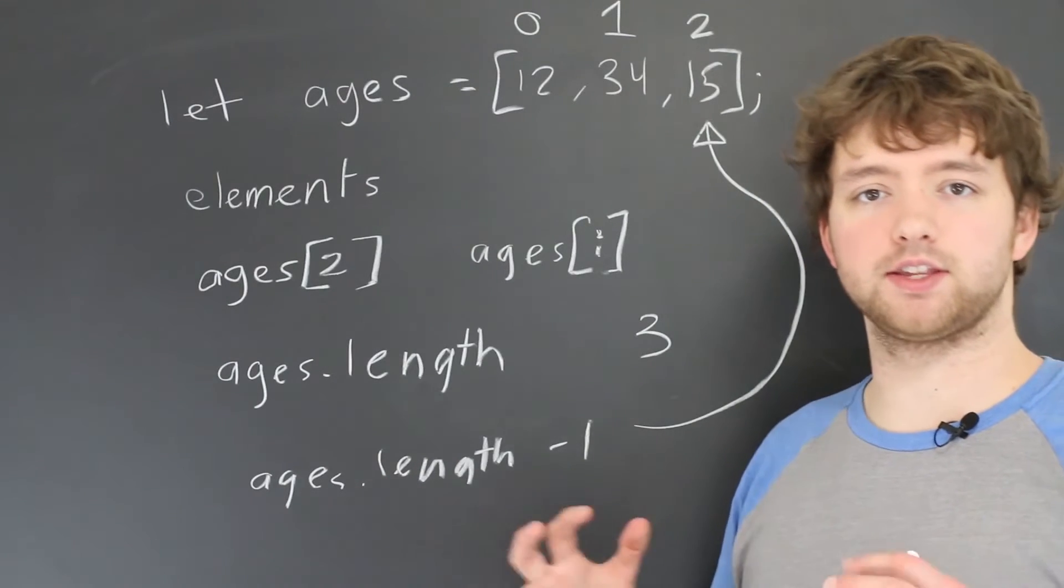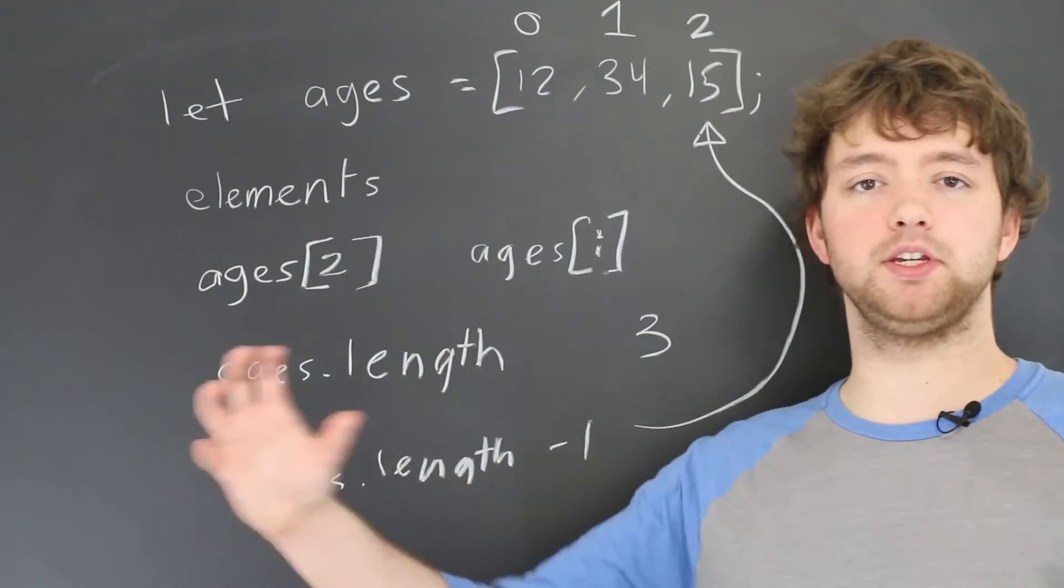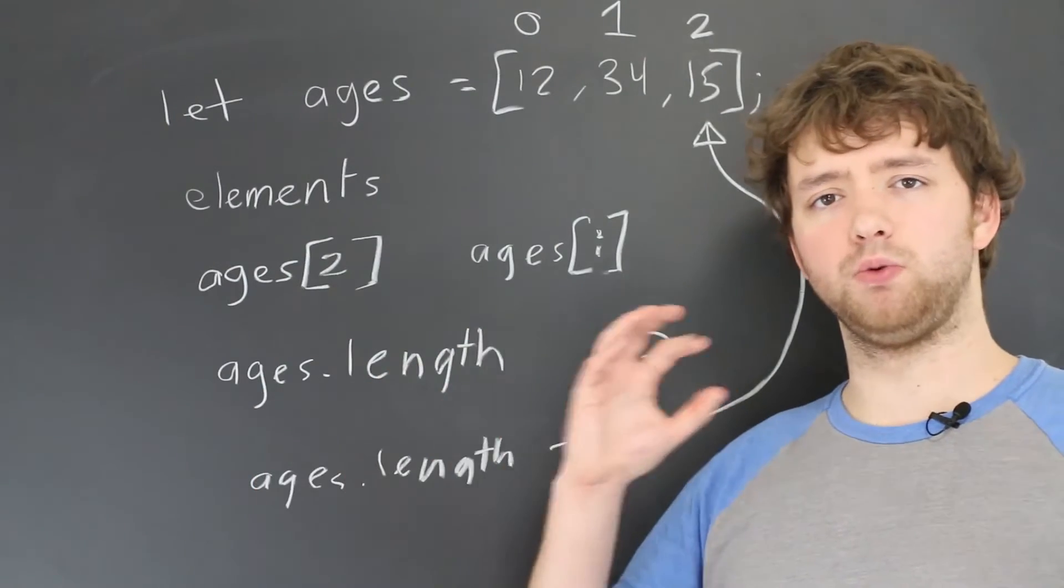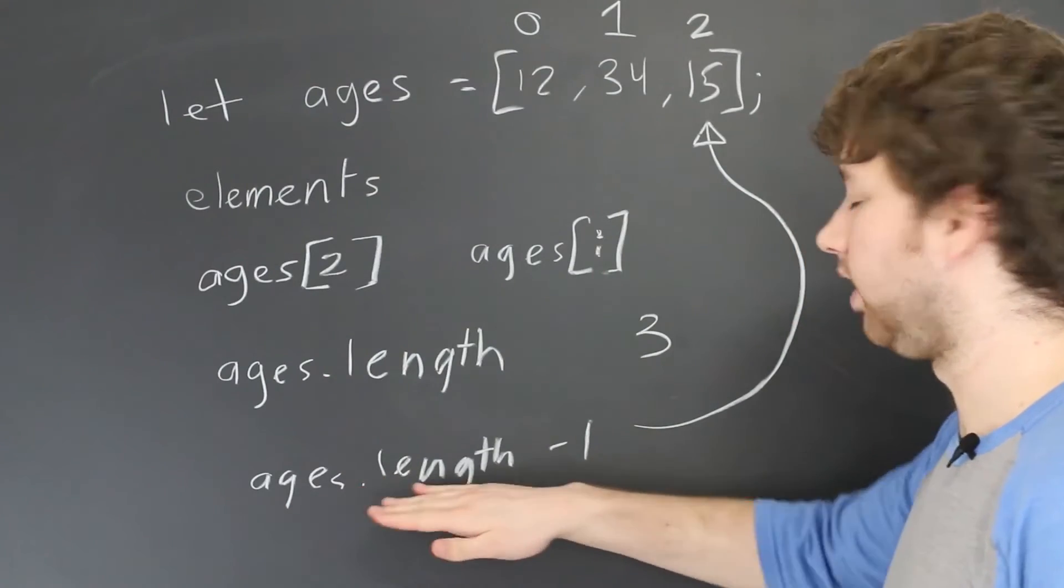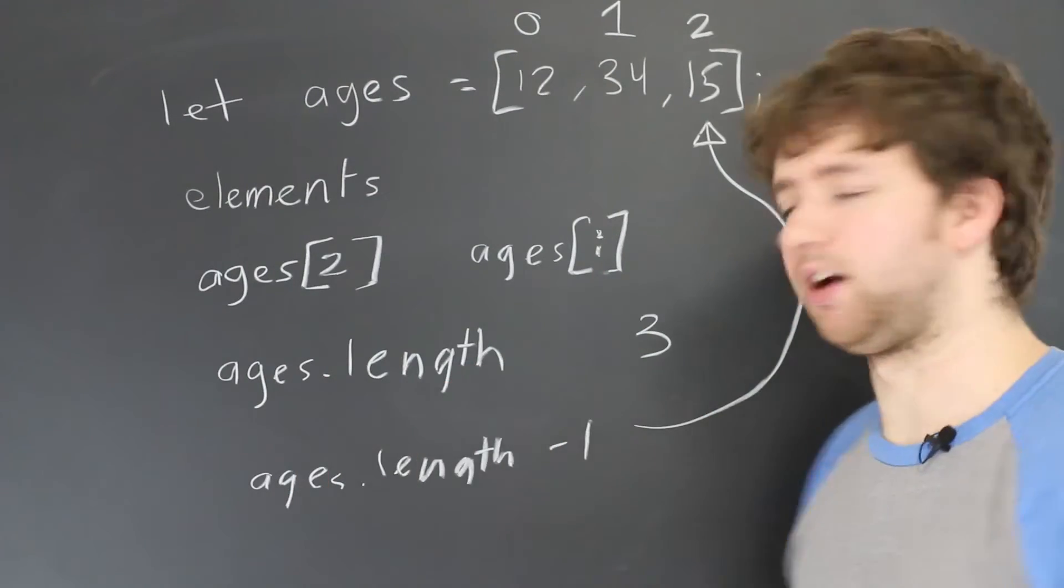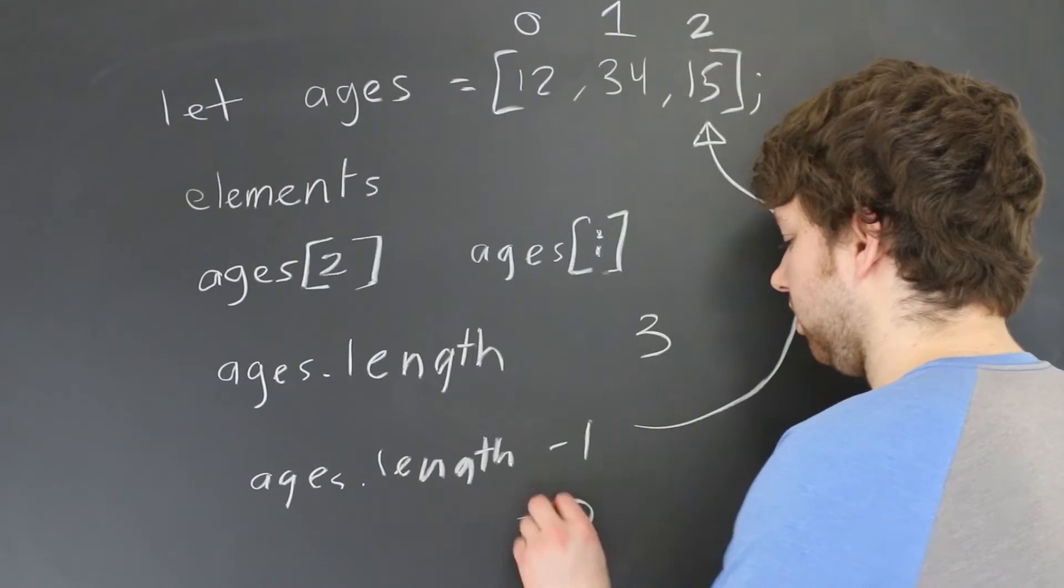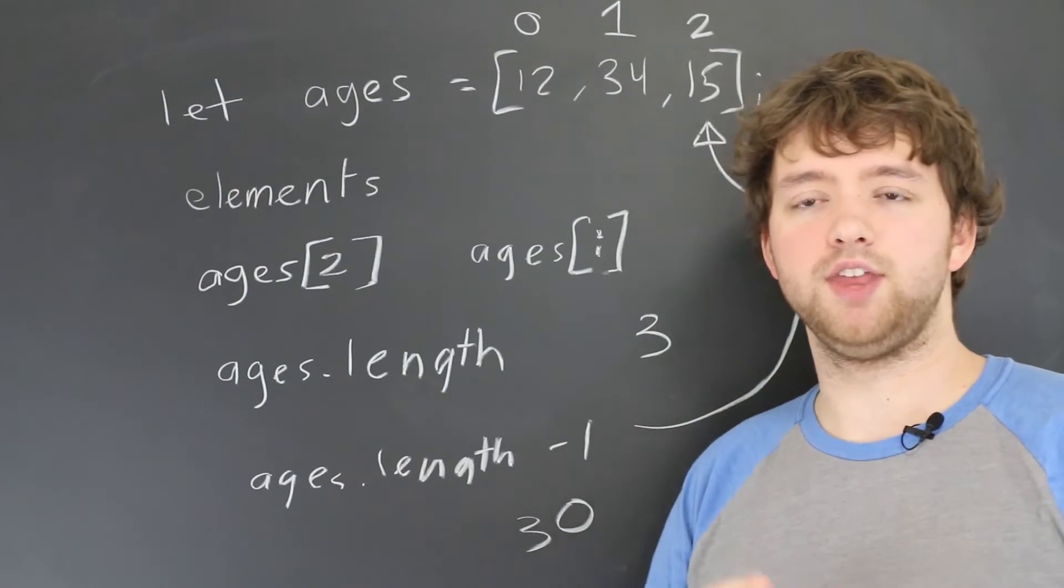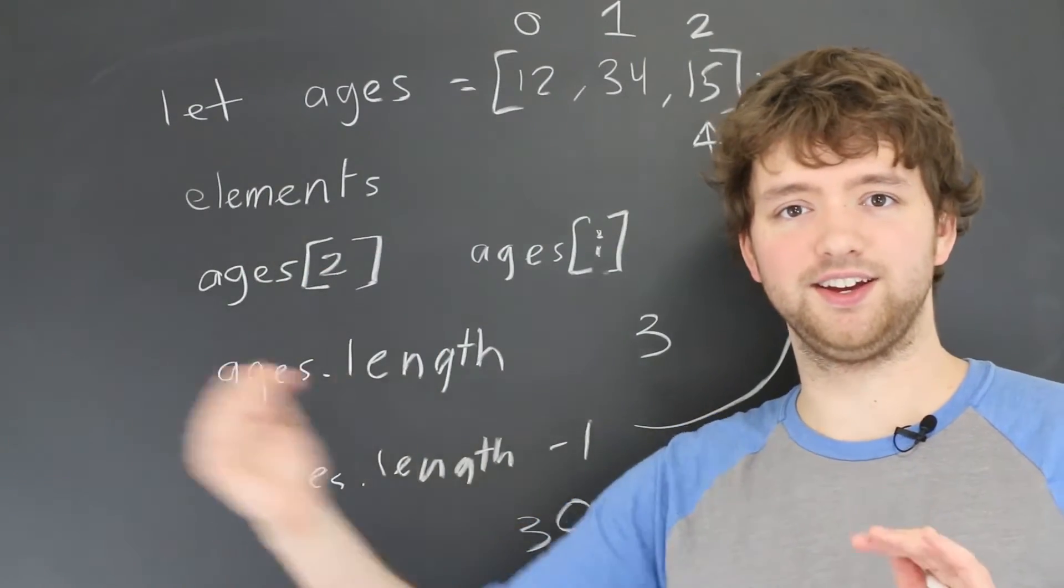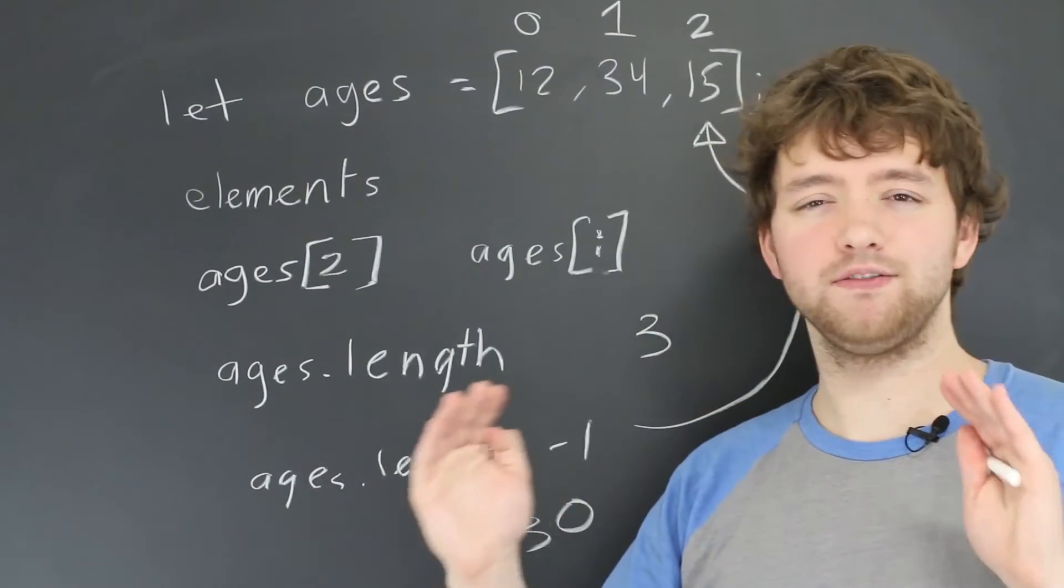Now one gotcha with JavaScript arrays is that there can actually be gaps in the array. So what exactly do I mean by that? Well, we might have ages.length being, let's say, the value 30, but there might only be three elements in there and then 27 undefined. Yeah, so JavaScript arrays are kind of annoying in that way, but you just kind of got to get used to it.